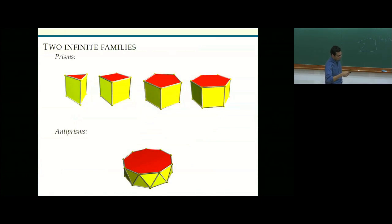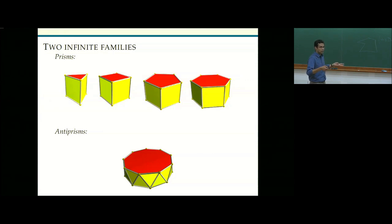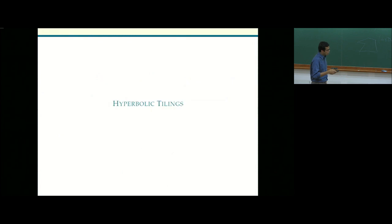For uniform tilings of the sphere, there are infinite families: prisms, where you can have arbitrarily many squares in the ring with a corresponding polygon at top and bottom, and similarly anti-prisms with equilateral triangles. Unlike Archimedean tilings of the plane where there are finitely many, on the sphere there are infinitely many uniform tilings.